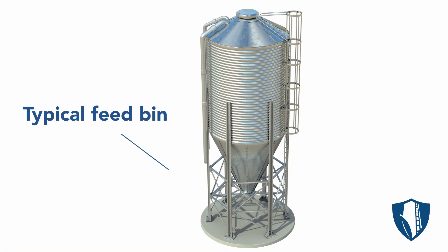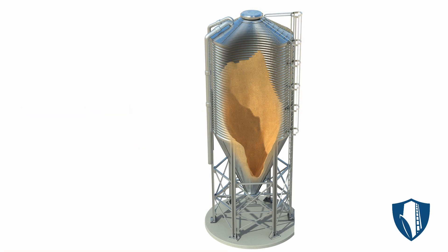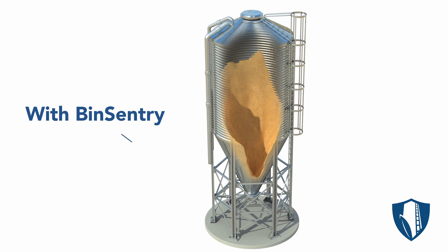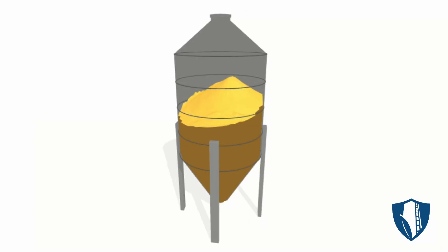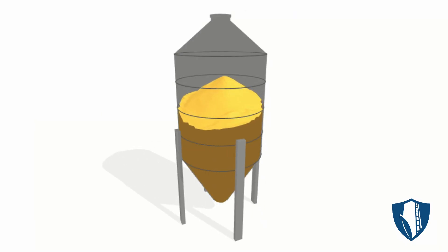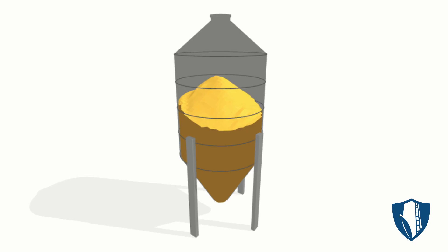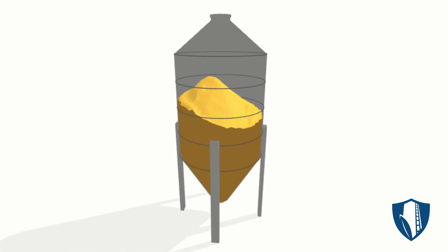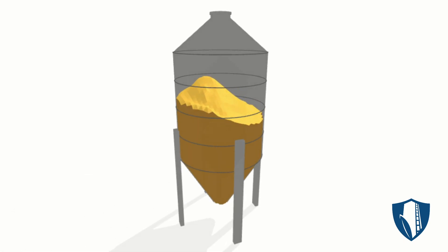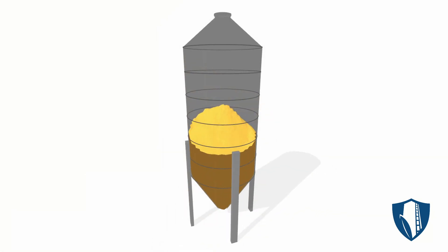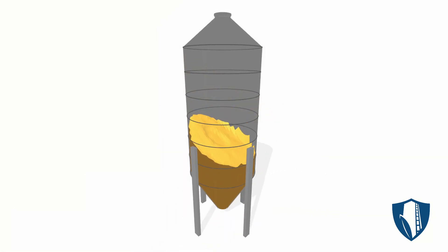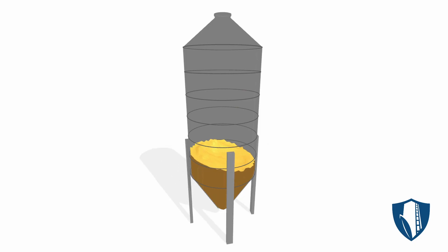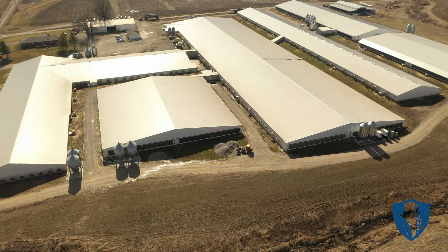Here's your typical feed bin. Now here's what it looks like with Bin Sentry. Our advanced sensor technology creates a detailed 3D image of the feed surface, so you can precisely see what's in your bin in near real time.